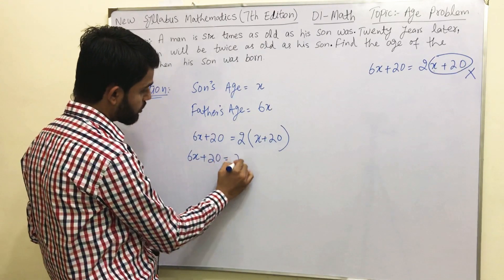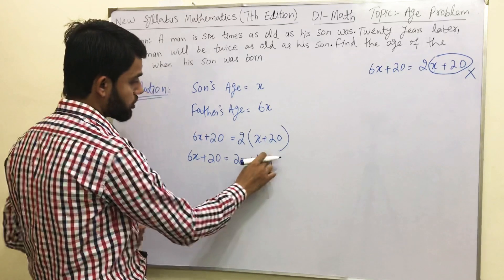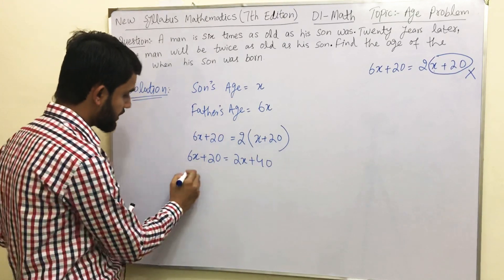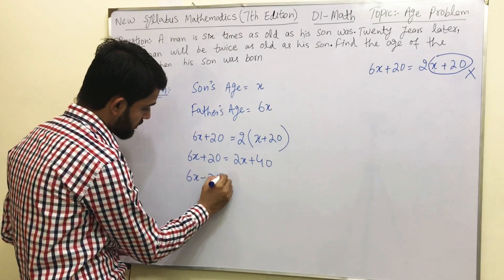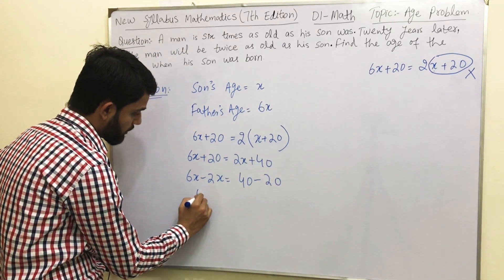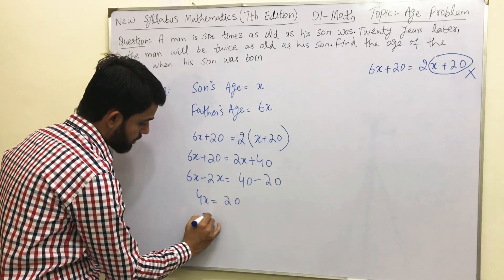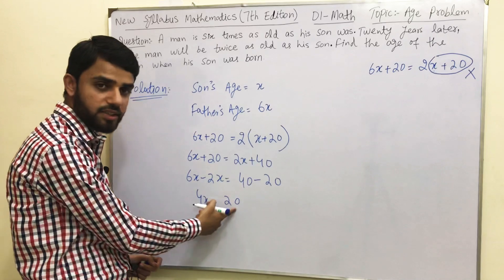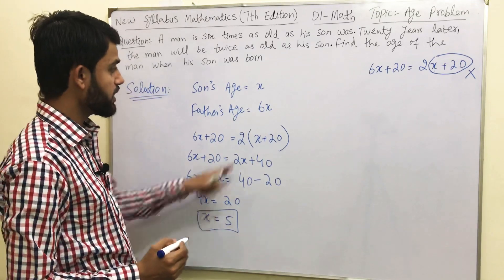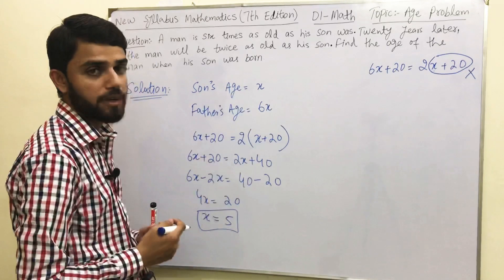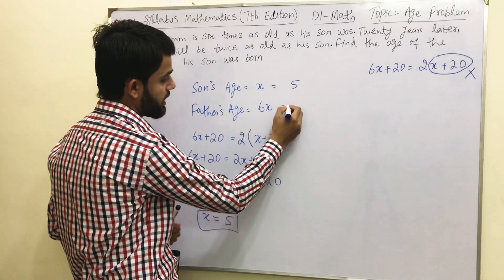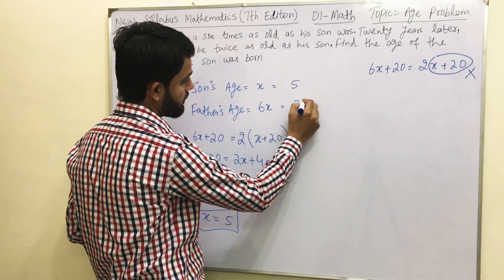Now this is a simple mathematical equation. 6x + 20 = 2x + 40. To find the value of x, collect similar terms on one side: shift 2x to the left — 6x − 2x = 4x — and shift 20 to the right: 4x = 20. Dividing both sides by 4 gives x = 5. So the current age of the son is 5.